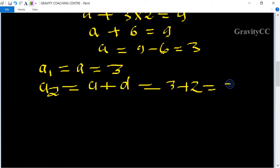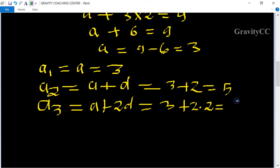Third term is a + 2d = 3 + 2 × 2 = 7. And fourth term equals a + 3d, so 3 + 3 × 2 = 6 + 3 = 9.